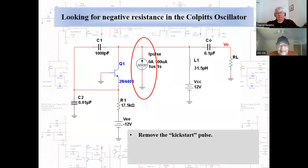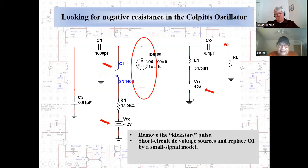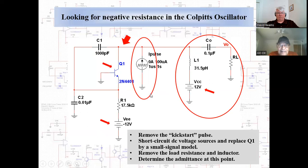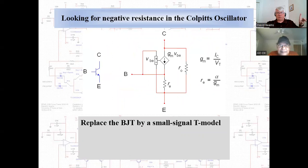Going back to the Colpitts oscillator — we'll take off the kickstart pulse since we're looking for negative resistance in an AC analysis. We short circuit the DC voltage sources and remove the load resistance and inductor. We're going to look at the admittance right at the node connected in parallel with the inductor and the load resistor — electrically speaking, what does all of this stuff on the left side look like?